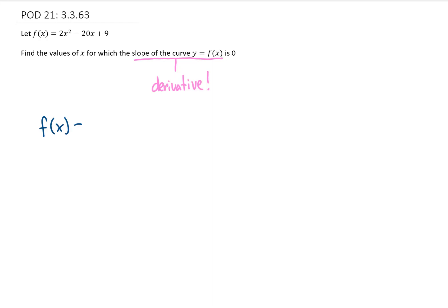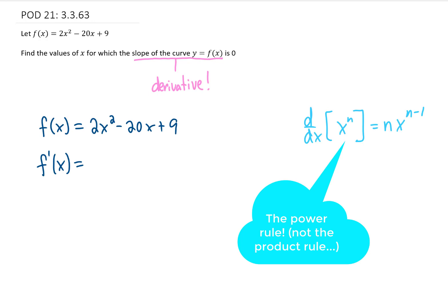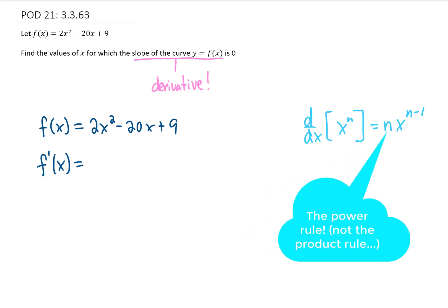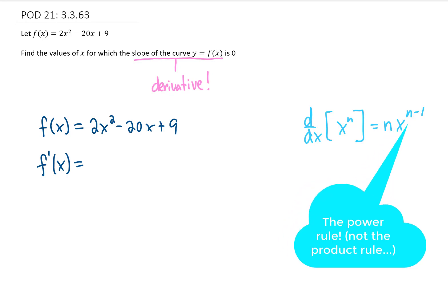We're going to take this original function and find its derivative using the power rule. The power rule says if we have x to some power, we can bring that power down, multiply that power by the coefficient, and then subtract 1 from that power.